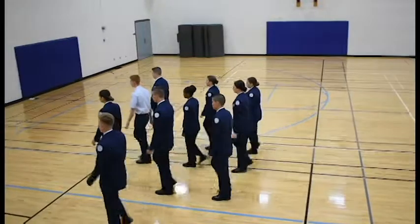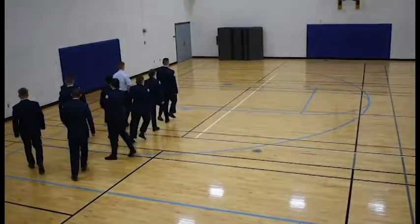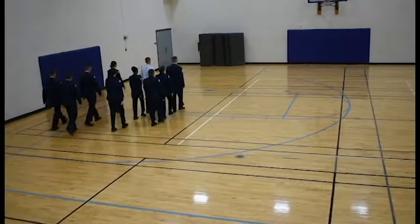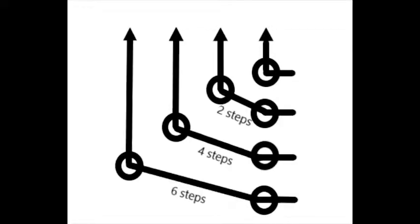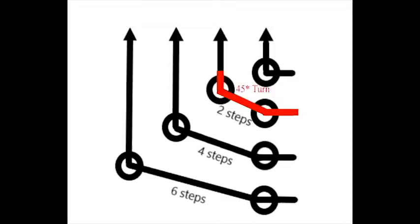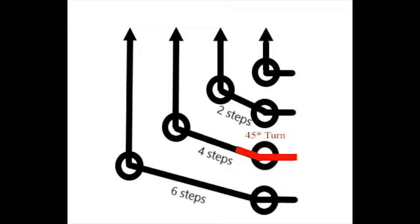Unlike flanking where everyone turns at the same time, columns are what Chief likes to call Simon says, where you will be turning at the same spot the person ahead of you turns at. The first column will take no steps and do an automatic right flank and go into a half step. The second column will execute a 45-degree flank, then take two steps and execute another 45-degree flank, and they will also go into half step. Then finally, the third will execute a 45-degree flank, take four steps, and then execute another 45-degree flank, and also go into half step.